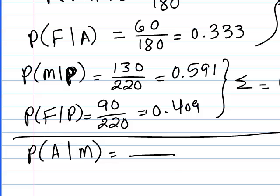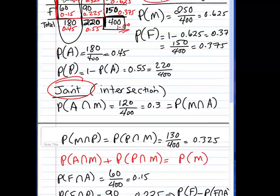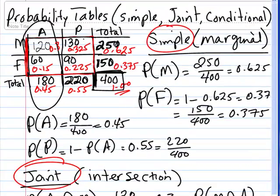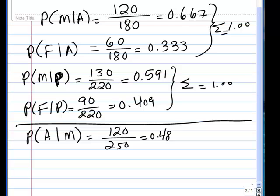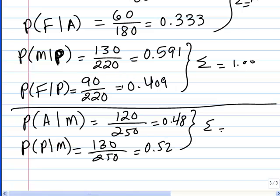That would be: we have 250 male individuals, and out of those, 120 buy a car because of its appearance. And that would be 0.48. You can see that right here — 250 are men, but out of those, 120 buy a car because of its appearance. Similarly, probability of buying a car because of its performance given that you're a man would be the remainder, 130 divided by 250, which would be 0.52. And those add up to 1.